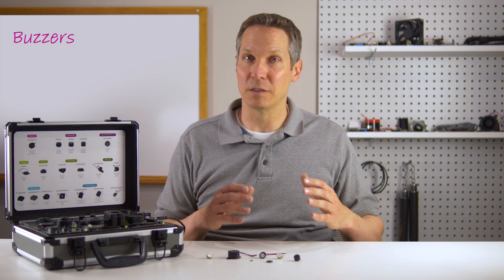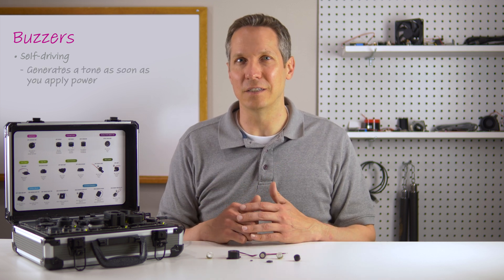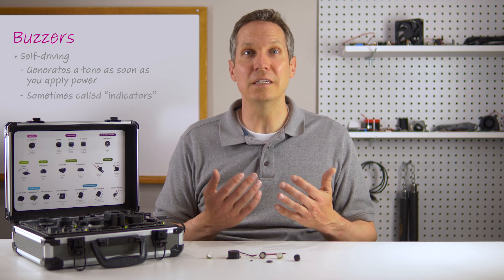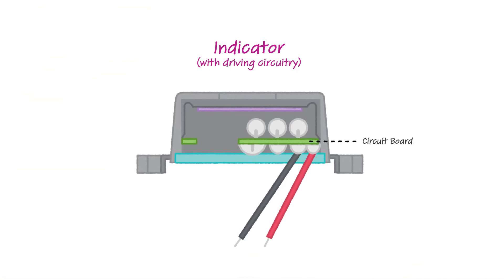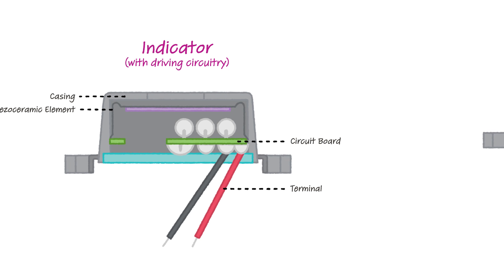Either type of buzzer can be self-driving or externally driven. A self-driving buzzer generates a tone as soon as you apply power, making it extremely easy to use. Sometimes these self-driving buzzers are called indicators because they often have a specific purpose. There is a small circuit board inside the indicator that takes the incoming power and drives the buzzer exactly as needed to produce the desired tone. Because of this, indicators tend to be slightly larger.